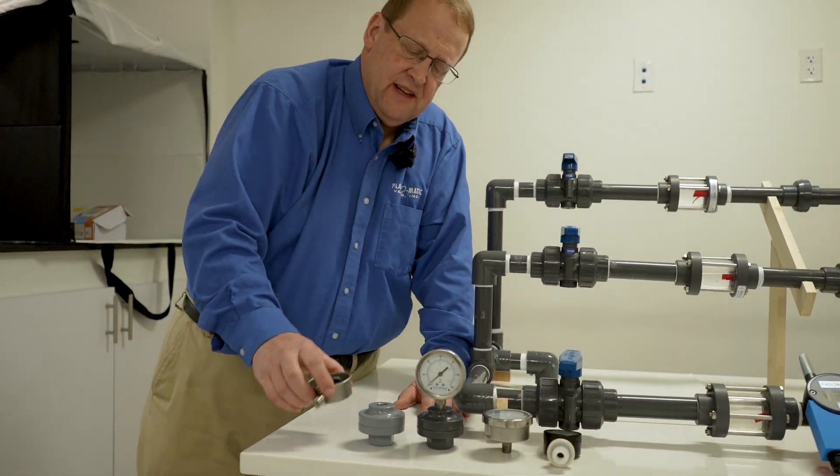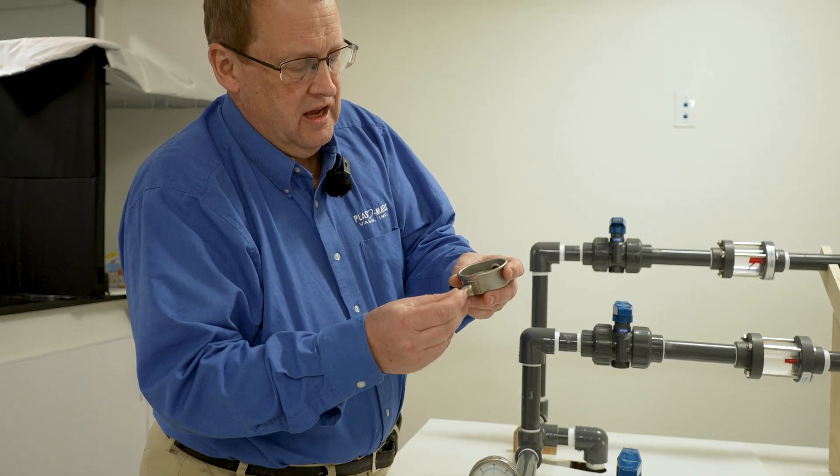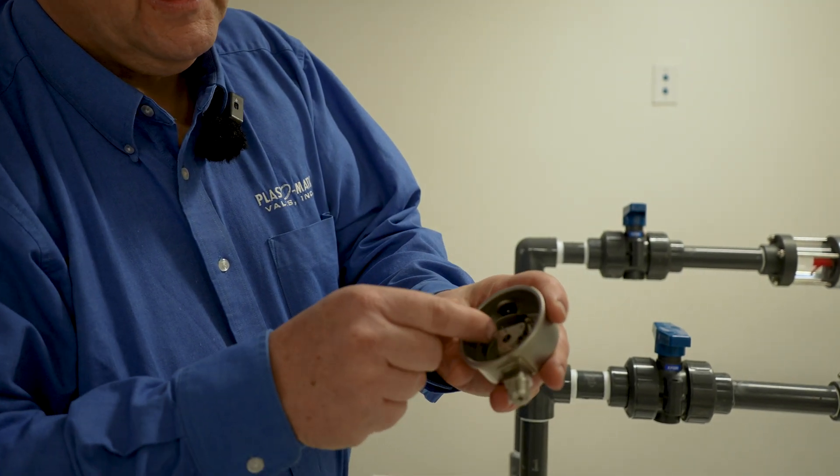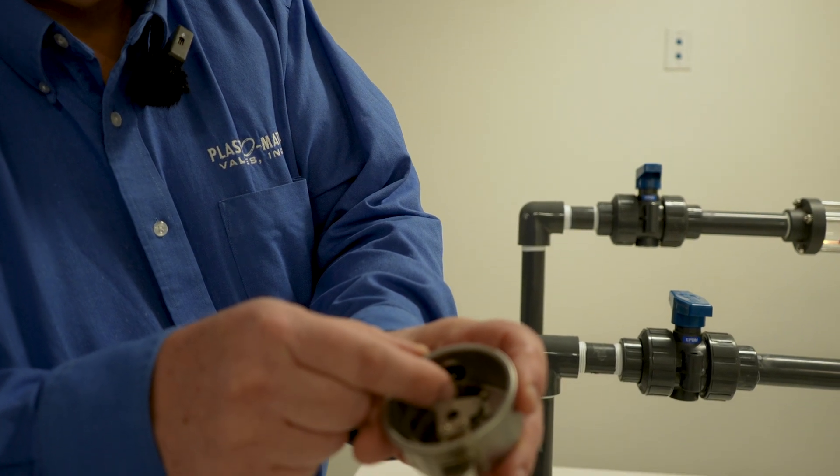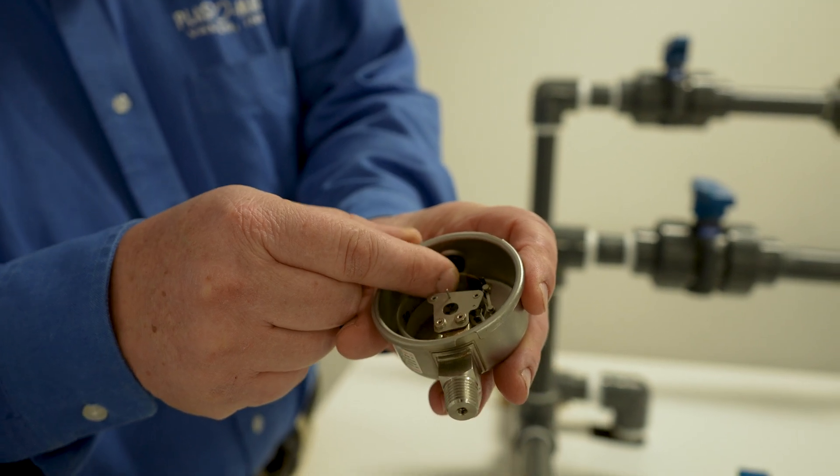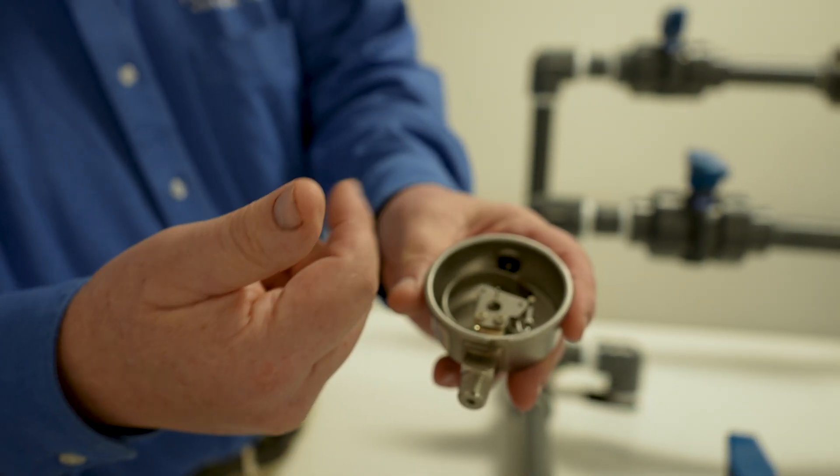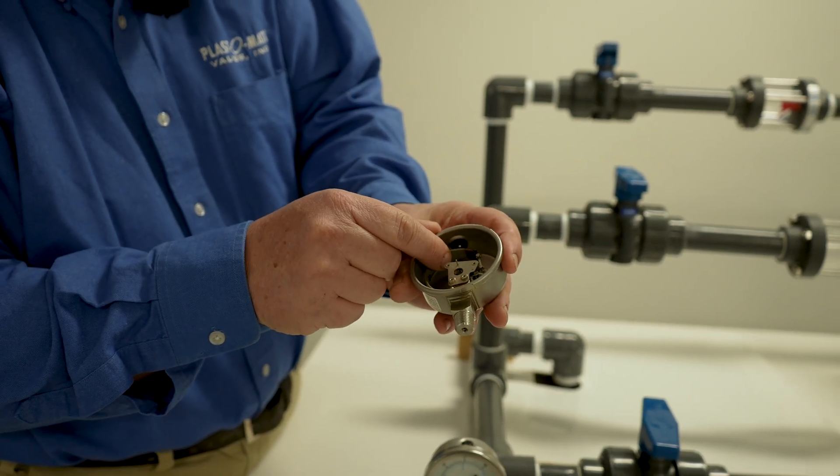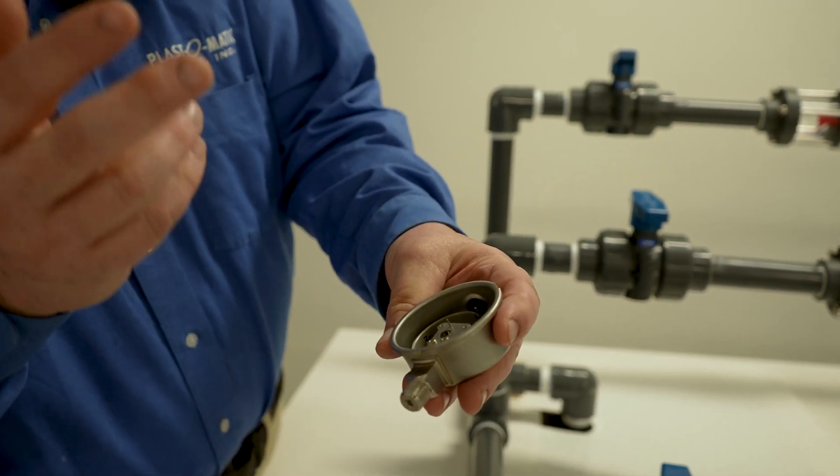The way these things work is there's liquid filled inside this Bordon tube and as the pressure increases the Bordon tube moves and this action moves the needle in the gauge. It's pretty simple, it's an ingenious thing. The problem with these is the metals can leach into your ultra pure liquid or in the case of chemicals the chemicals can attack the Bordon tube or other components.